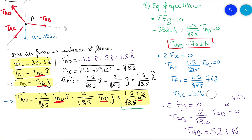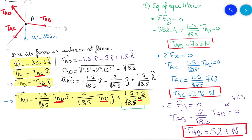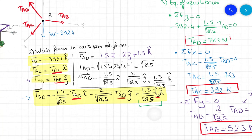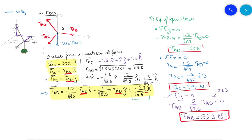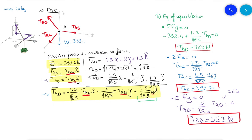So we have TAC equals 392 newtons and TAB equals 523 newtons, keeping three significant figures. We were able to solve for each unknown using one equilibrium equation at a time. The key is to begin with the sum of forces on Z equals zero first, because that's where we have the known weight W and only TAD has a k-component. Be careful not to make mistakes at the beginning, as errors will propagate through all answers.